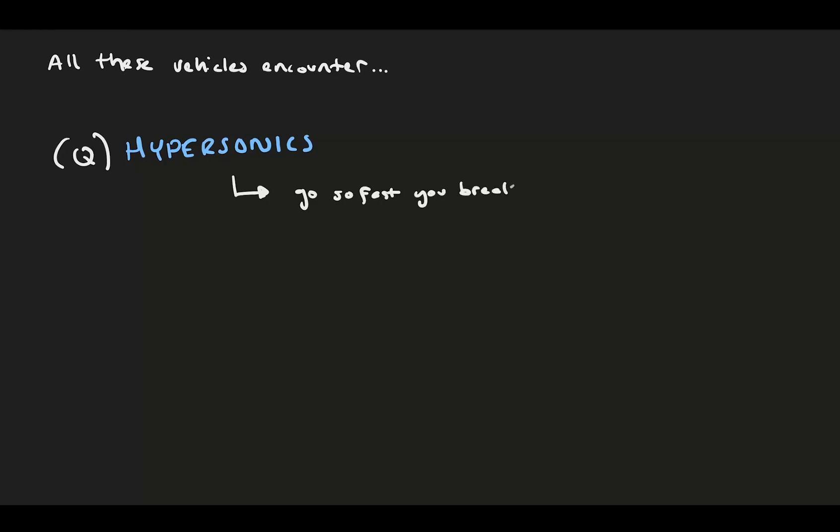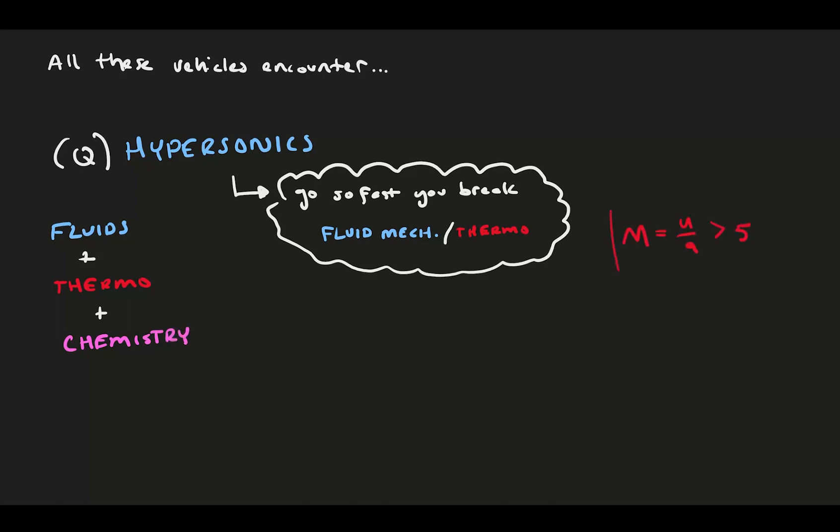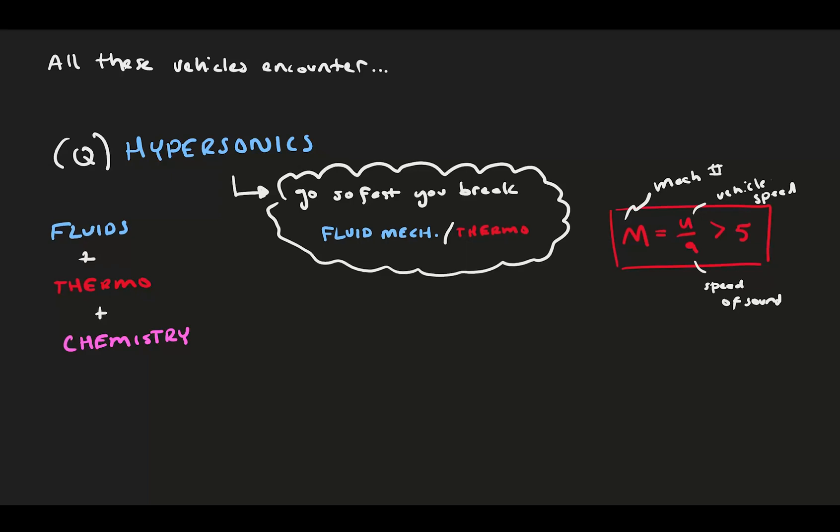Hypersonics is the fuzzy boundary of vehicle speed, at which point you're going so fast our main analysis techniques for fluid mechanics and thermodynamics break entirely. I like to think of hypersonics as being a combination of fluid mechanics, thermodynamics, and chemistry. A good rule of thumb is that flow past Mach 5 is hypersonic, but it has a lot of wiggle room. It's better to understand the chemical processes that happen when you keep adding energy to a gas to see why there's no clear cutoff for hypersonics.